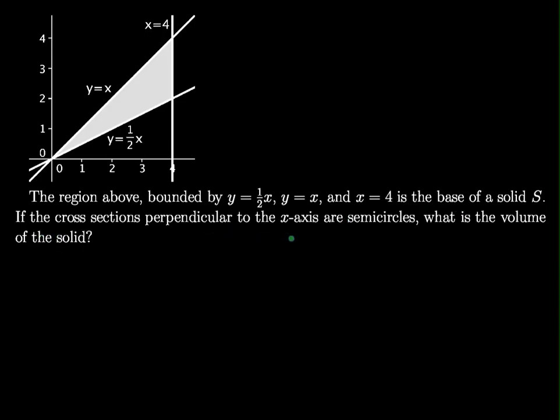If the cross sections perpendicular to the x-axis are semicircles, what is the volume of the solid? And as with all the videos, let us lay this down flat a little bit so we can try to see what the overall shape looks like.